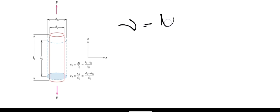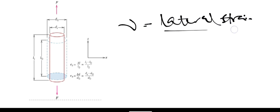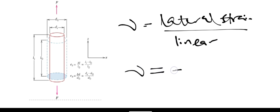For example, if the diameter is 10, it might become something like 9-point-something — there will be a reduction in diameter. That is what Poisson's ratio is all about. It is denoted by v, equal to lateral strain over linear strain. Mathematically: v = −ε_L / ε, where ε_L is the lateral strain and ε is the normal (linear) strain.